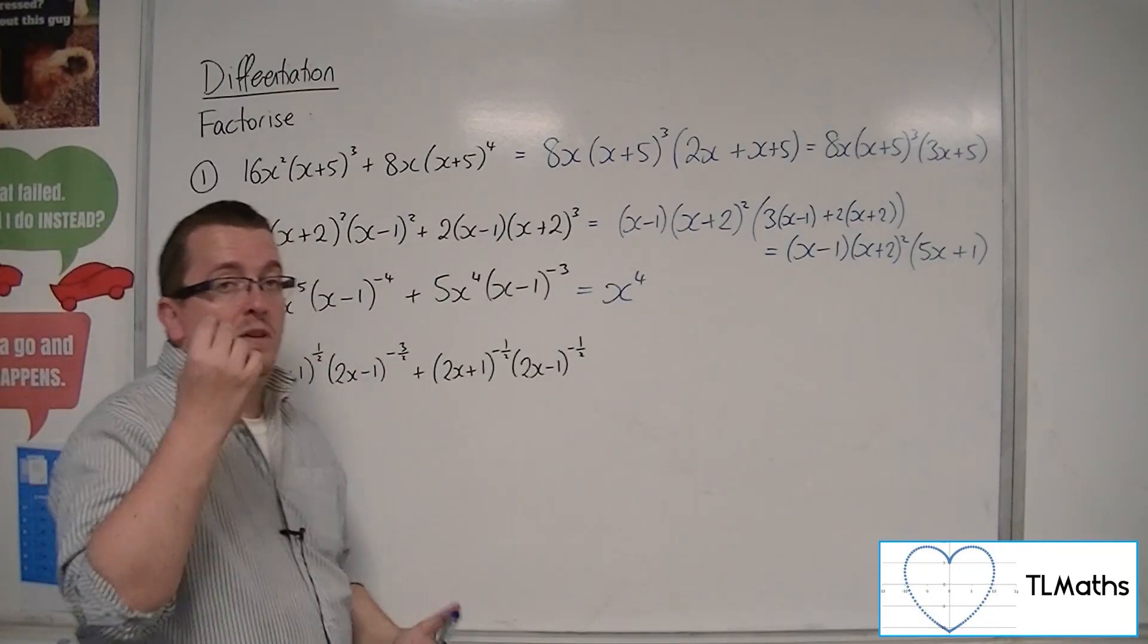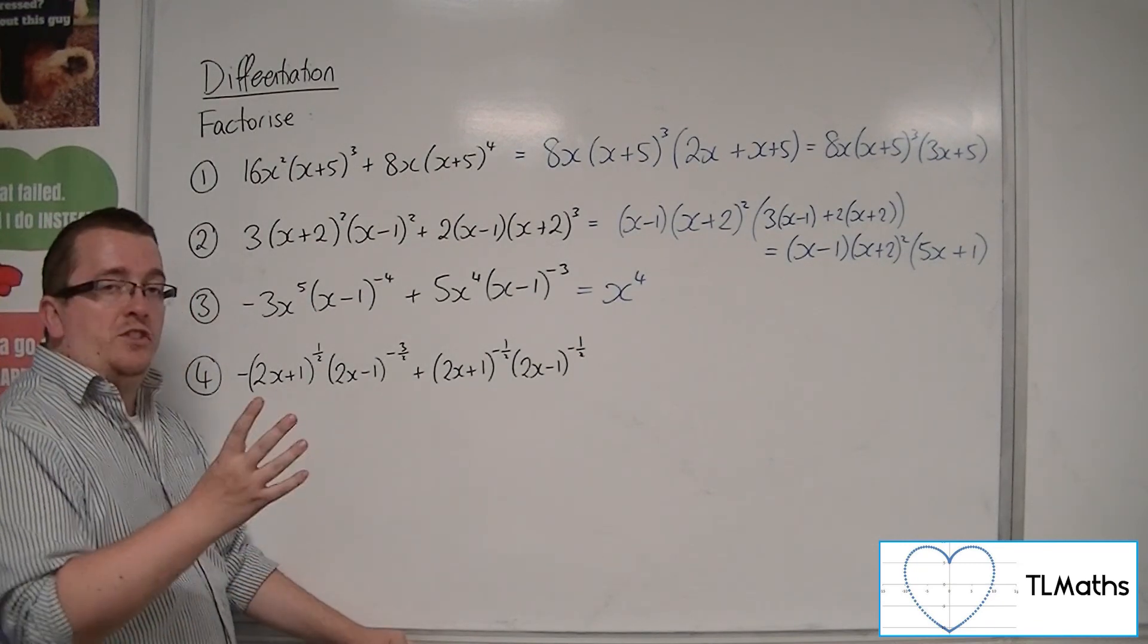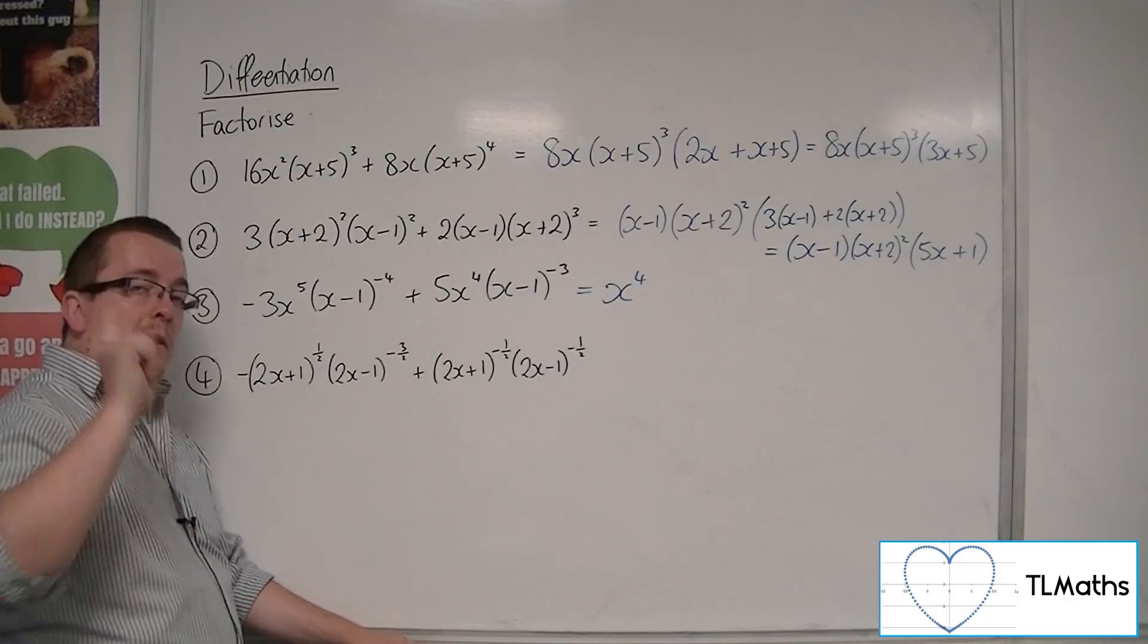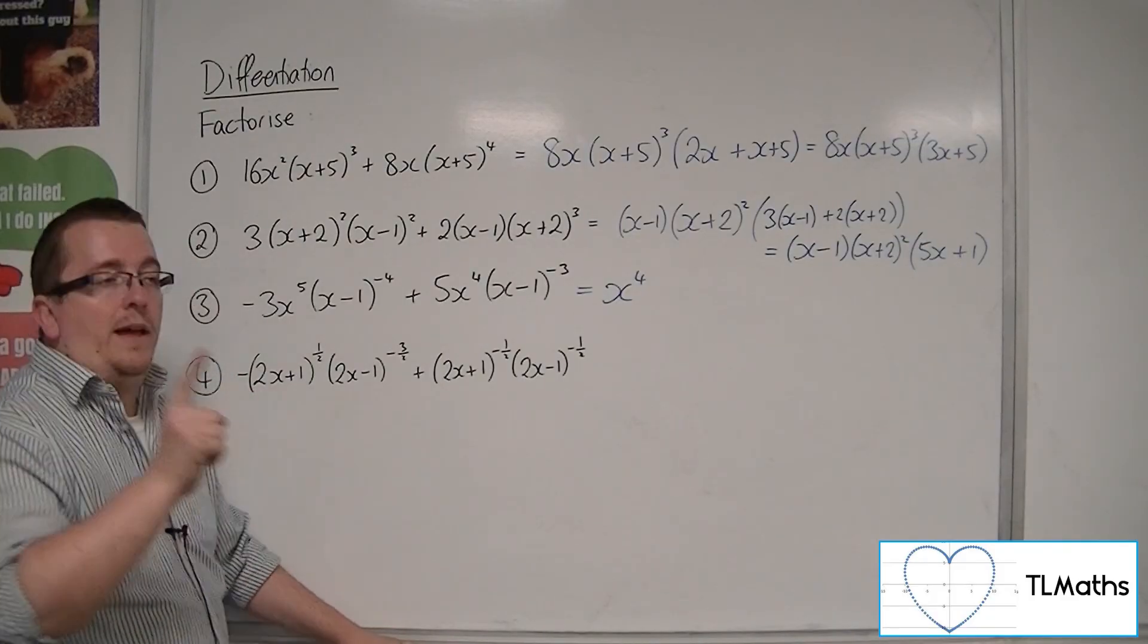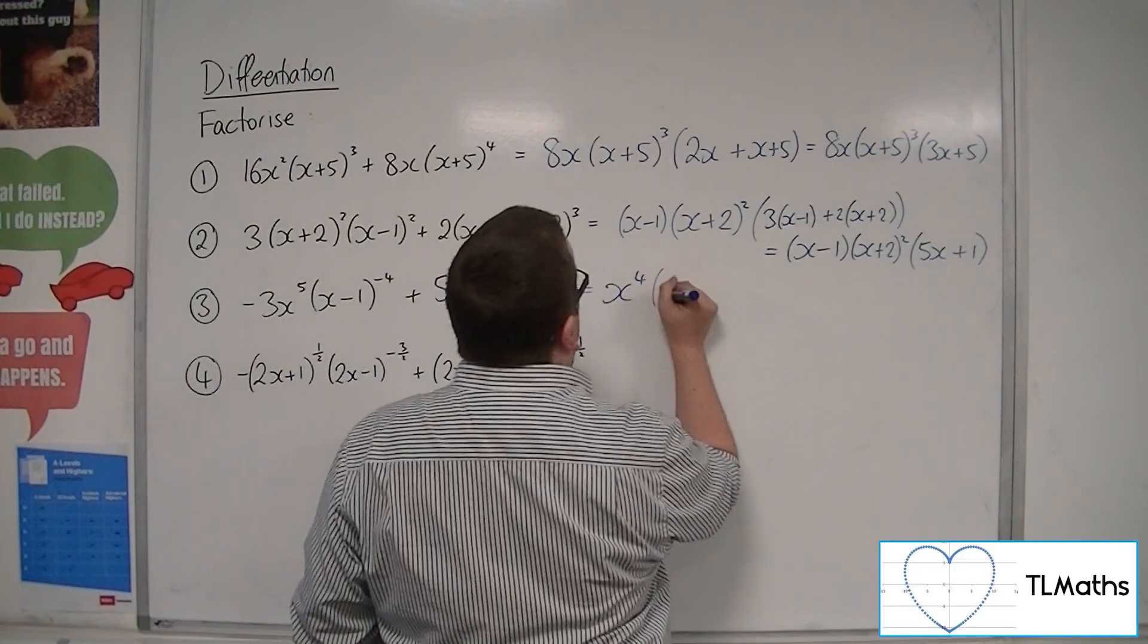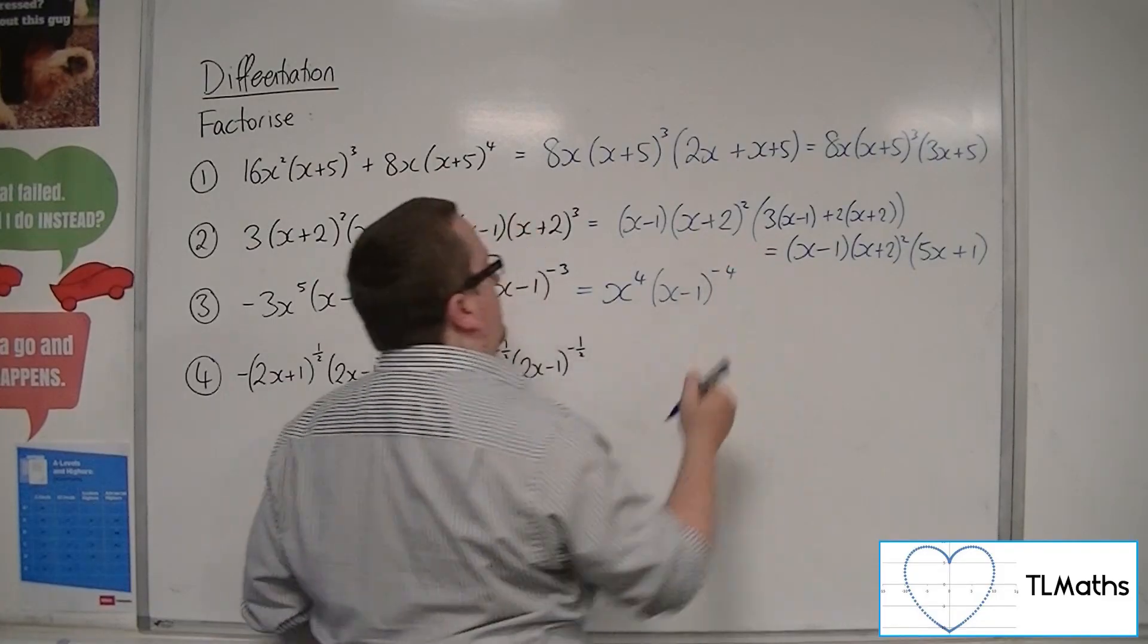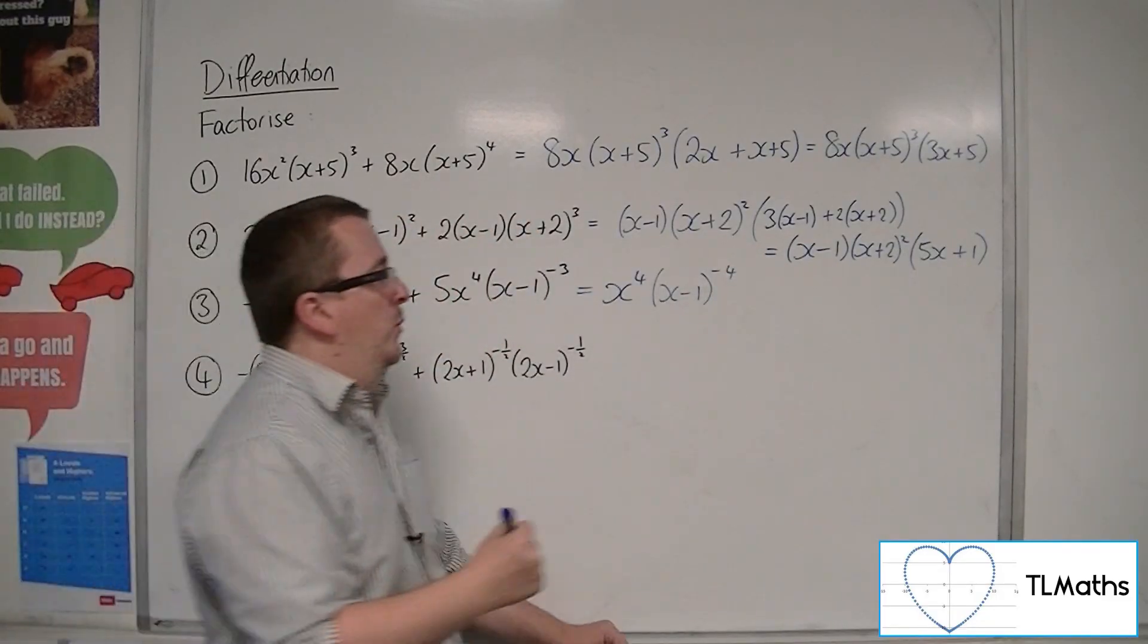We would naturally probably focus on the -3 and pull out (x-1)^(-3), but that's not the lowest, is it? It's -4. So actually you pull out (x-1)^(-4), otherwise you're going to hit trouble. So (x-1)^(-4) gets pulled out.